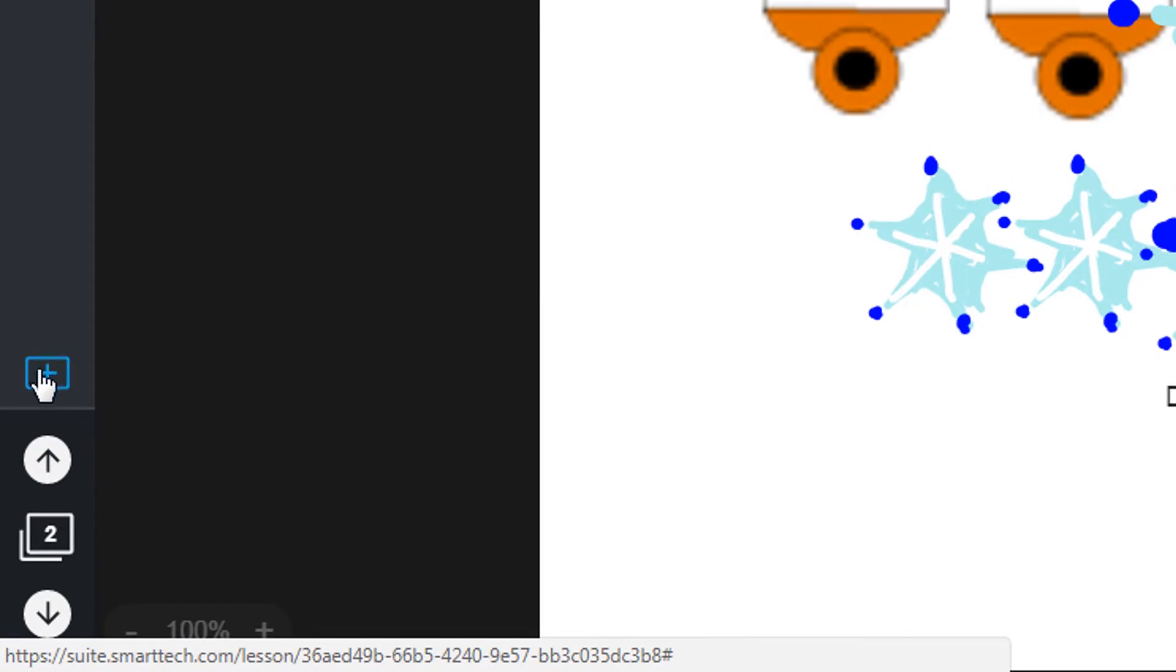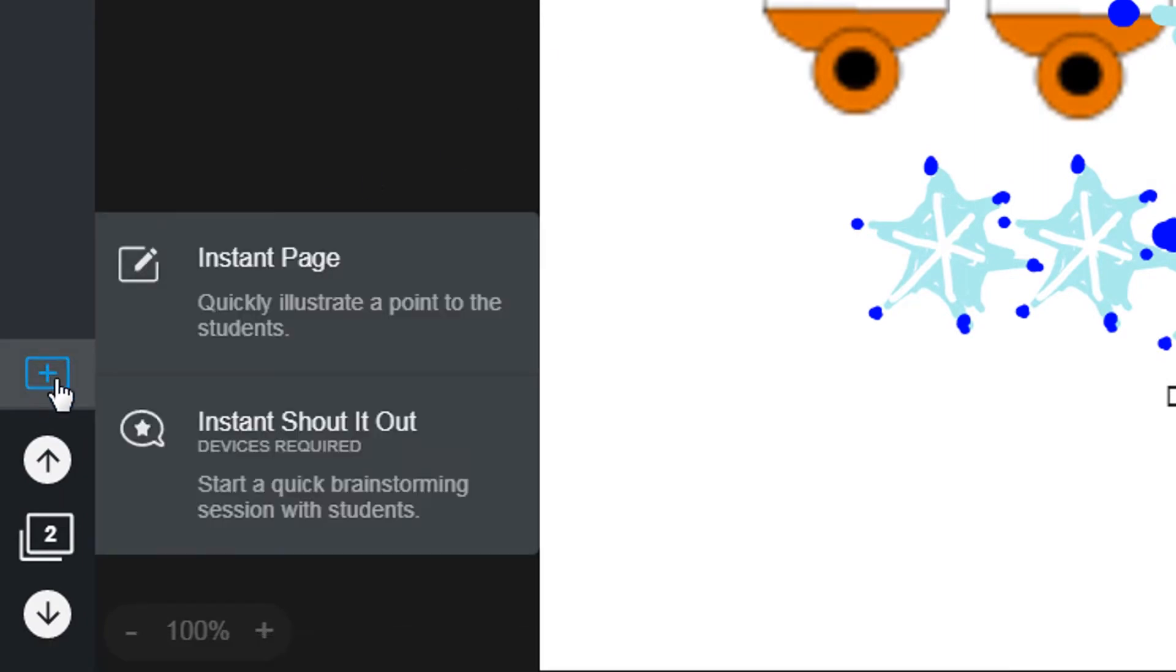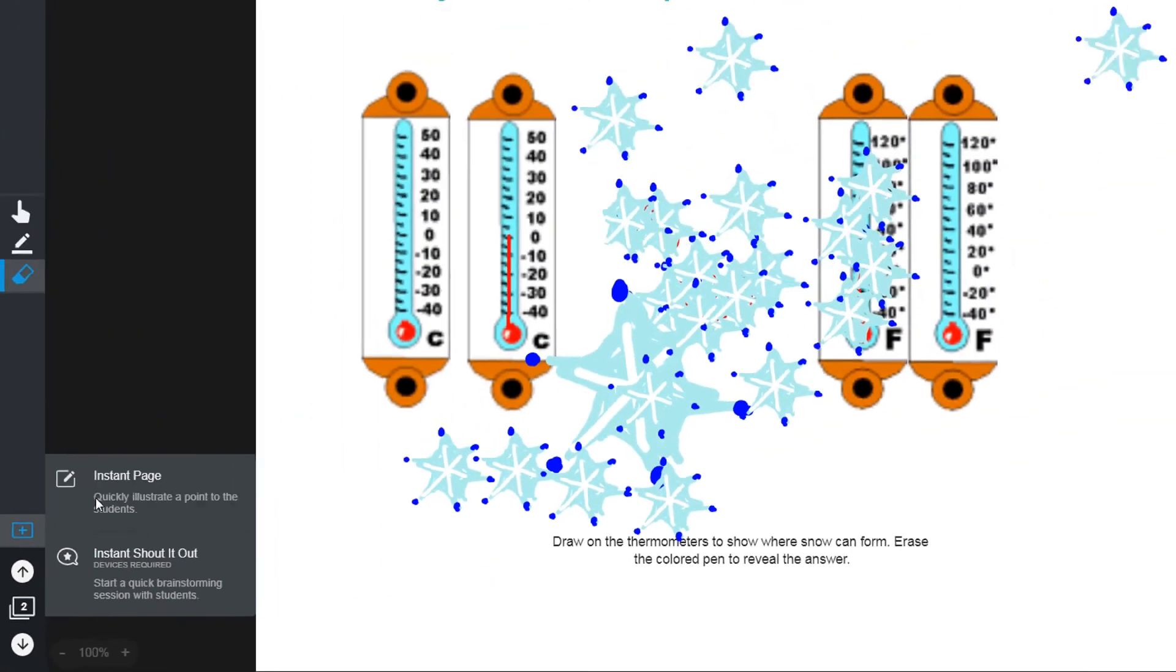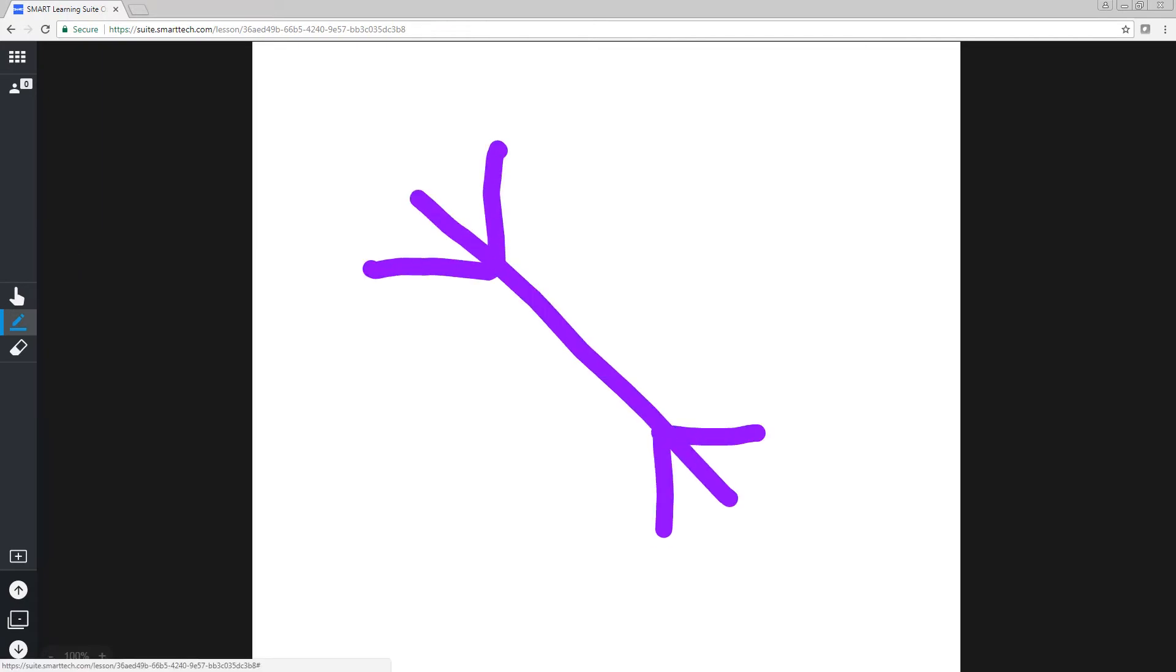We've also added a couple of tools just for online delivery. You can add a blank page while you're delivering a lesson. This is useful if you want to write down an idea or you need some blank space to illustrate a concept. You could use this blank page to show a snowflake six-sided structure.